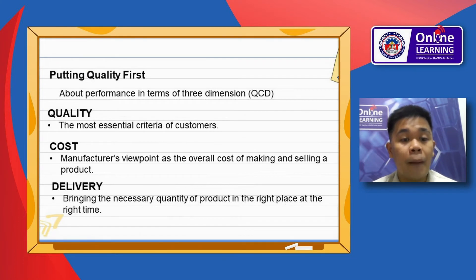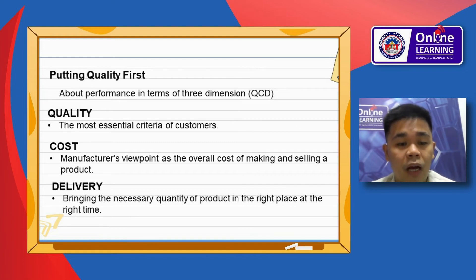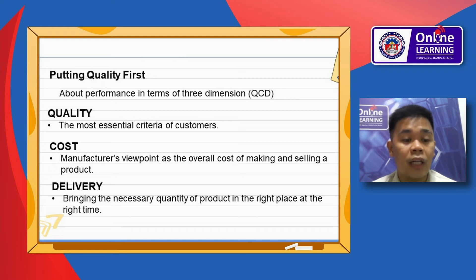Putting quality first involves performance in terms of three dimensions, or QCD: Quality, Cost, and Delivery. Quality is the most essential criterion for customers. Cost is the manufacturer's viewpoint of the overall cost of making and selling a product. Delivery means bringing the necessary quantity of a product to the right place at the right time.